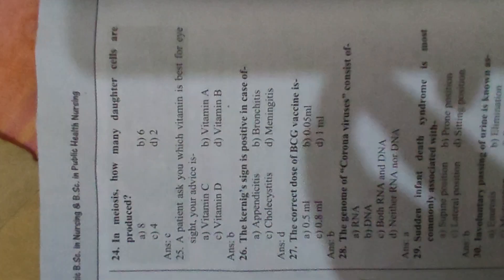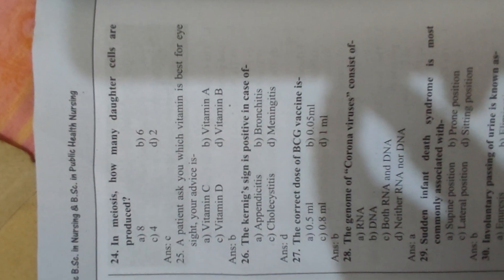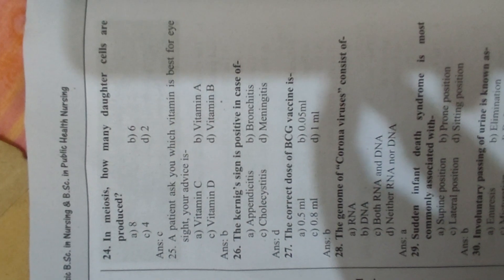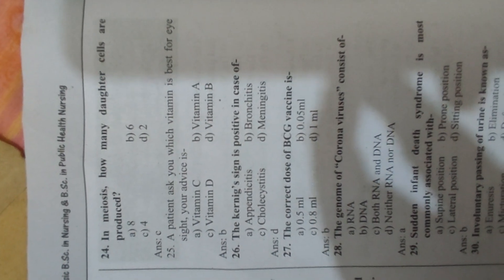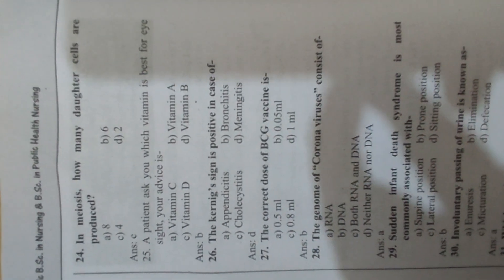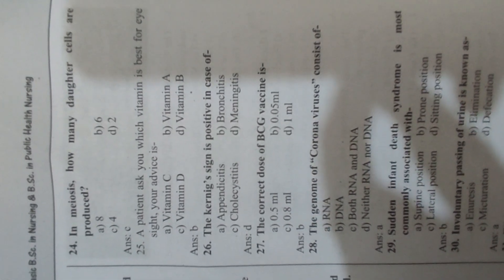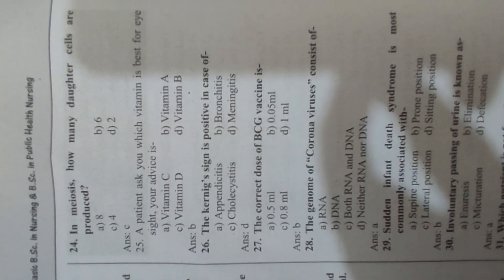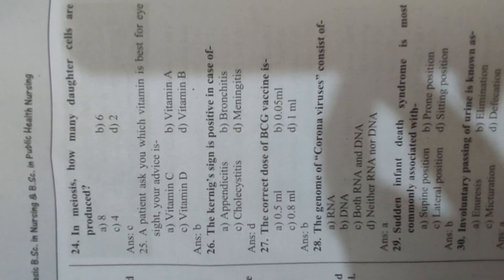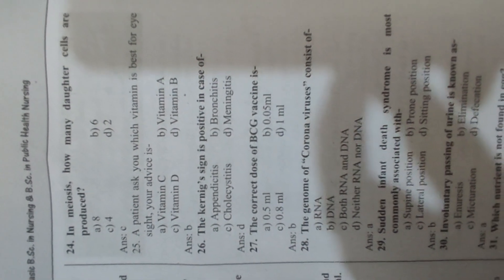Question 24: In meiosis, how many daughter cells are produced? Answer C, four. Question 25: A patient asks you which vitamin is best for eyesight. Your advice is Answer B, Vitamin A.